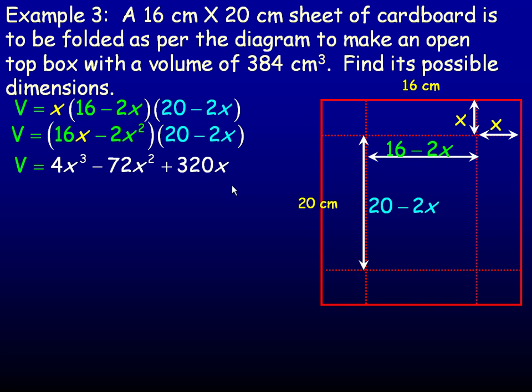And we're told that that's supposed to equal, the volume is supposed to equal 384. And so we'll set this formula equal to 384, and now we have a polynomial equation to solve to find x, what x could be.